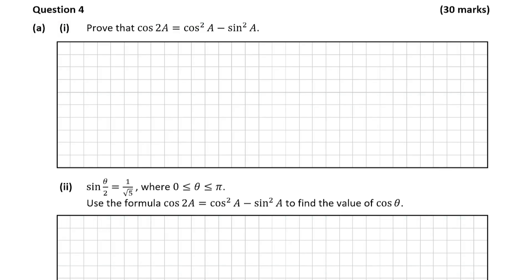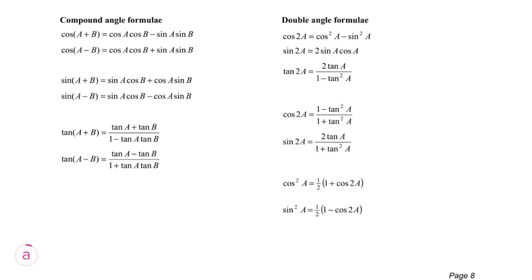This is a trigonometry question worth 30 marks. In part a, part one, we're being asked to prove that cos(2a) is equal to cosine squared of a minus sine squared of a. We're going to use a compound angle formula from our logbook to prove this. Looking at the logbook, the cosine of a plus b equals cosine of a times cosine of b minus sine a times sine b.